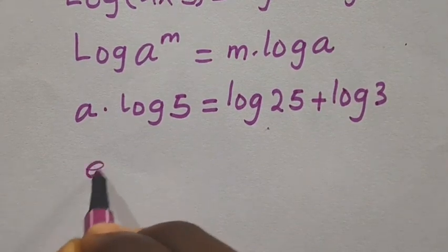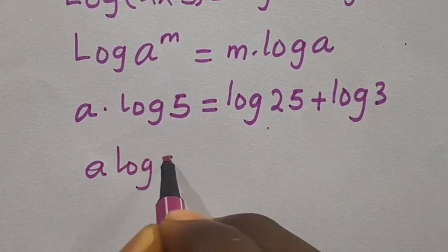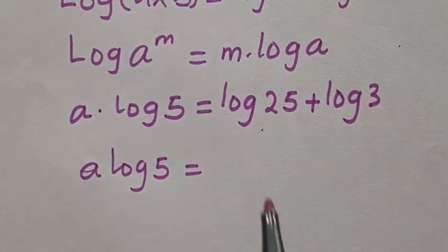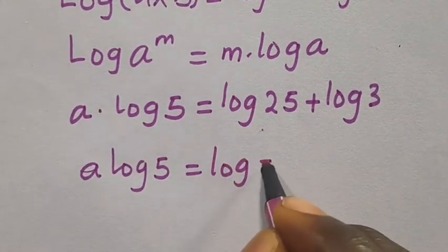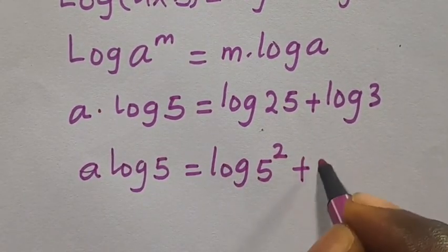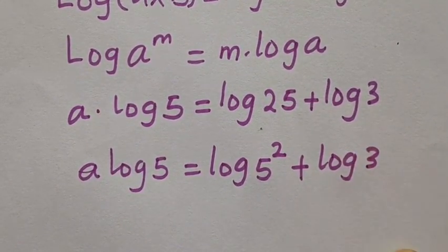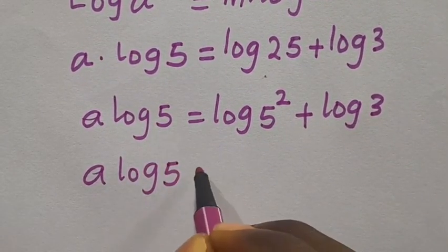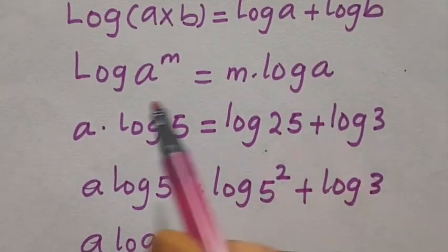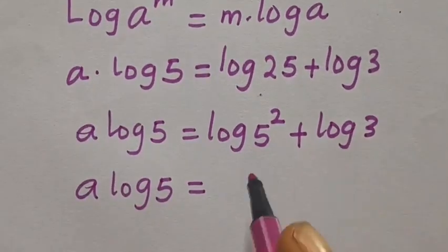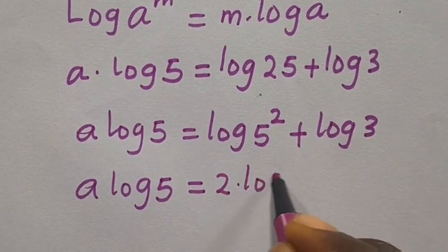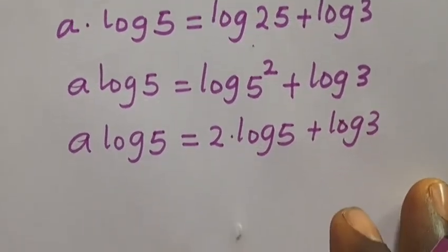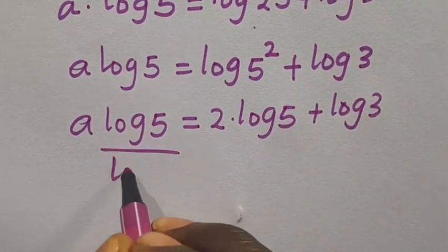So we have a multiplied by log 5 equals log of 25 plus log of 3. Now let's write 25 as 5 squared, so this becomes log of 5^2 plus log of 3. Applying the power law, the 2 comes down, giving us 2 times log 5 plus log 3.